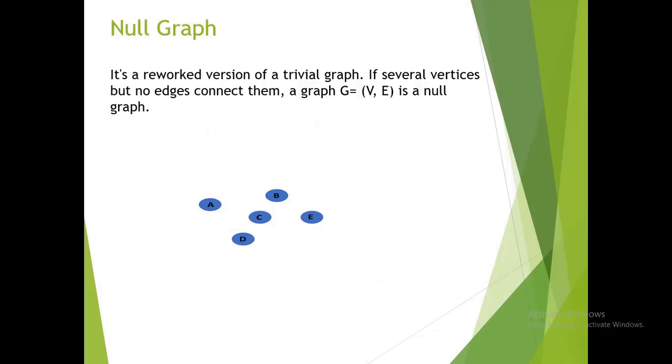Null graph: it is a revised version of a trivial graph. It has several vertices but no edges connect them. A graph G = (V, E) is a null graph.